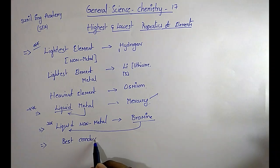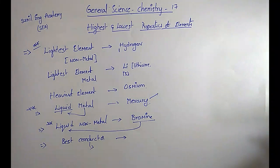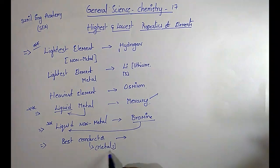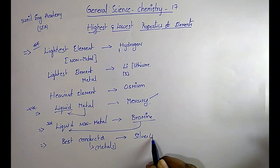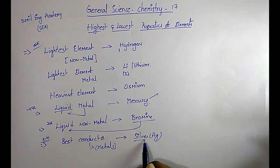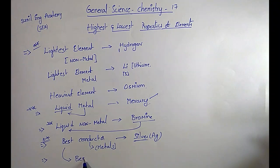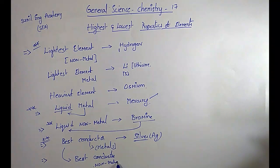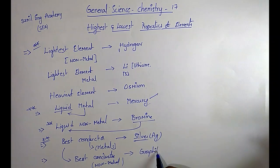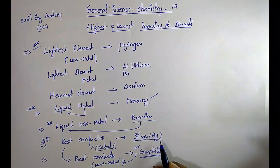The next one: best conductor. A conductor allows electricity through it. In case of metals, the best conductor is silver (Ag) — very important. And in case of nonmetals, the best conductor is graphite, which is an allotrope of carbon. So, graphite is the best conductor among nonmetals, and silver is the best conductor among metals.